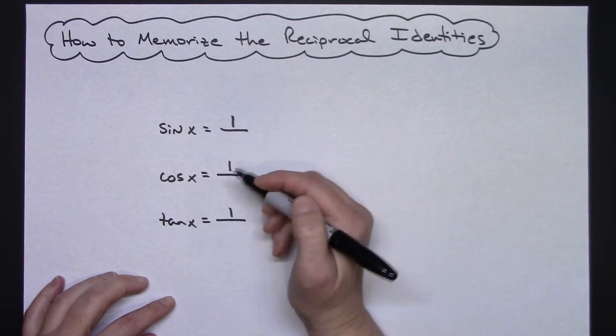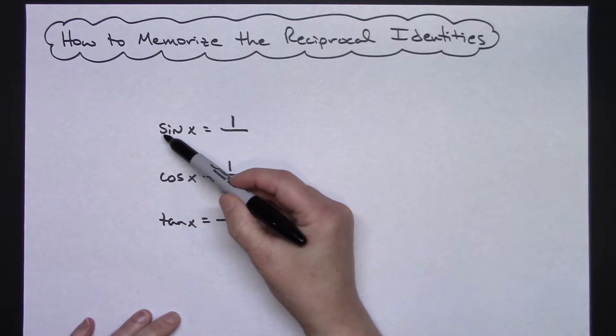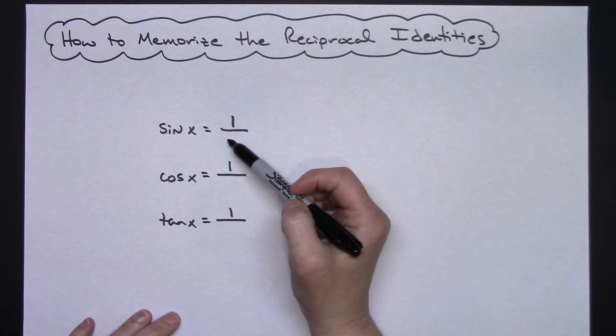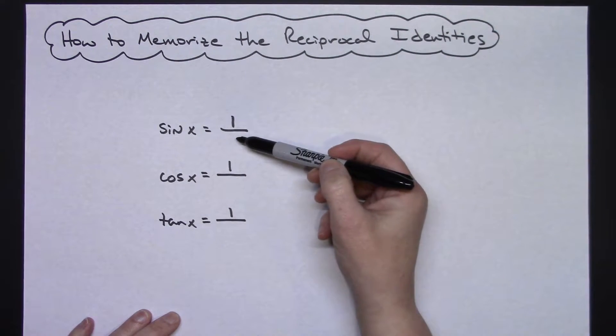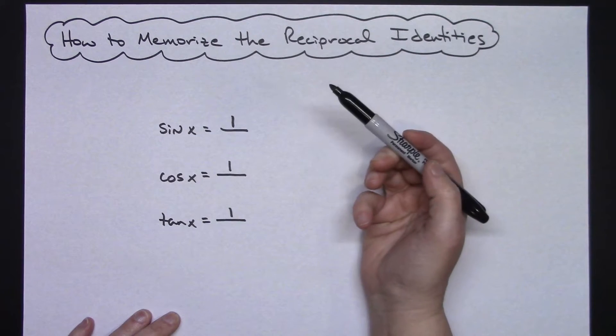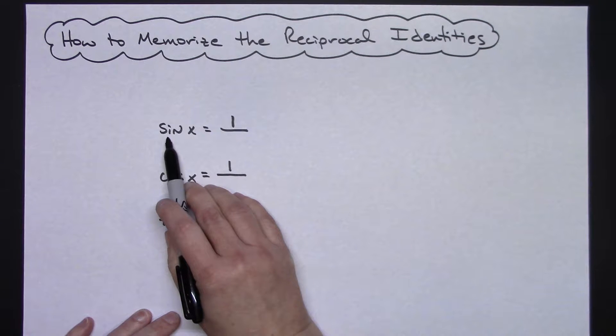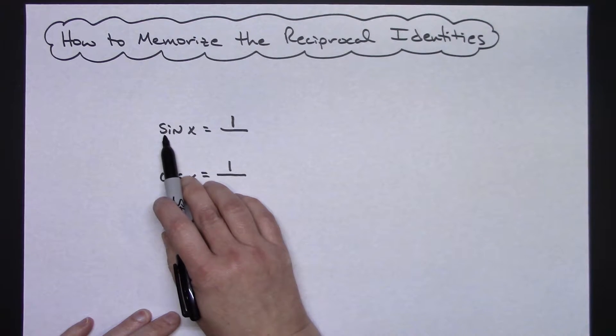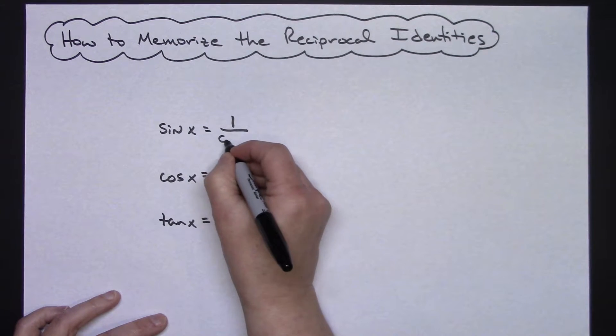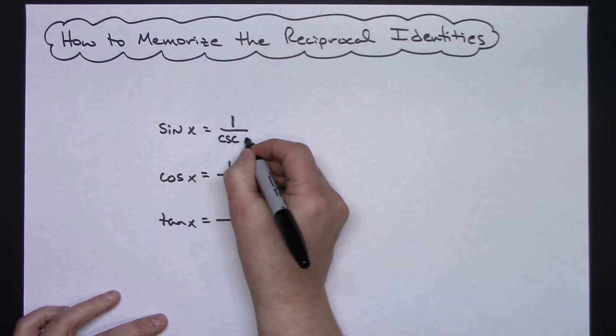Now for sine, I tell my students think of that first letter S, and then the reciprocal identity of that is always the opposite letter. So instead of an S I'll have my C, and each one of these denominators are going to be the co-functions. So sine, think S opposite letter C, so this has to be the cosecant of x.